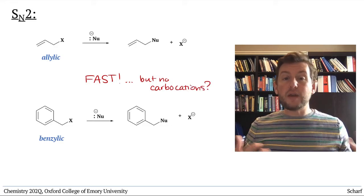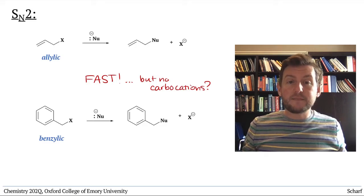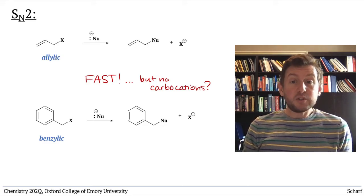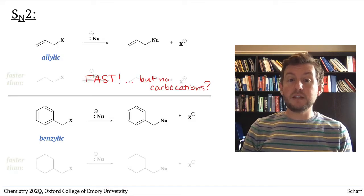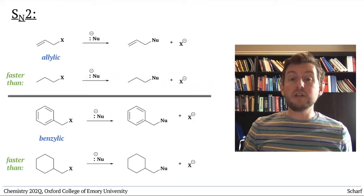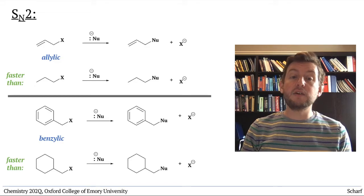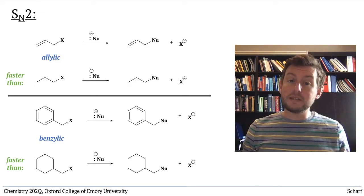So there's no intermediate to stabilize by resonance. But when we measure the rates of SN2 reactions of allylic and benzylic leaving groups, we see that they're substantially faster than analogous leaving groups that aren't allylic or benzylic.